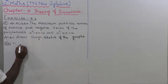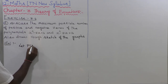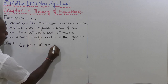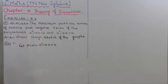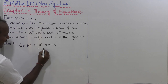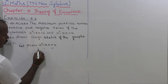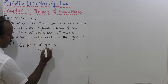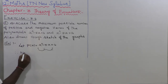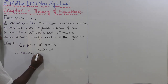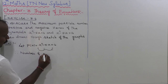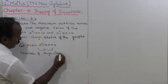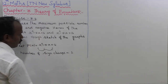Let us consider p of x equal to x squared minus 5x plus 6. The first term is plus, second term is minus, third term is plus. So the sign changes: plus to minus is one sign change, minus to plus is a second sign change. Therefore, number of sign changes is equal to 2.